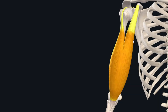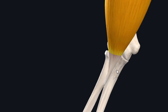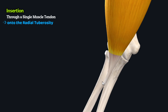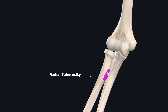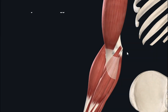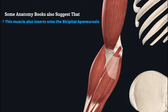After their origins, the two heads of the biceps brachii converge to form a single muscle belly, which then inserts through a single muscle tendon onto the radial tuberosity. The radial tuberosity is an outgrowth on the proximal and medial aspect of the radius. Some areas of anatomical study also suggest that the biceps brachii inserts onto the bicipital aponeurosis.